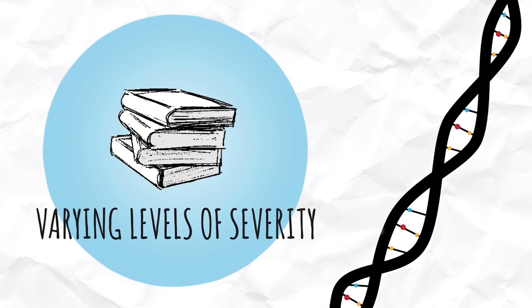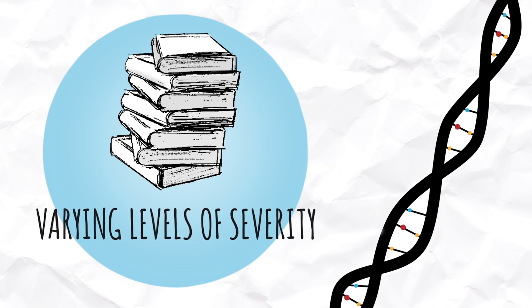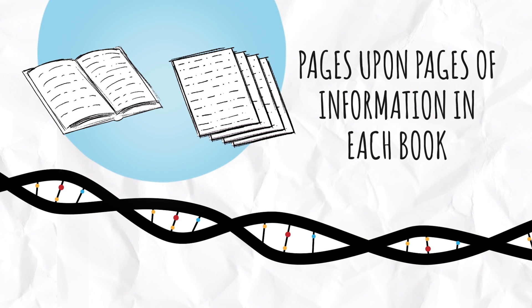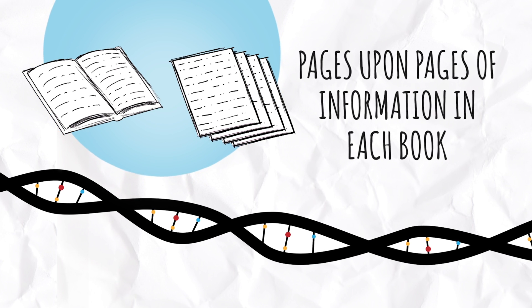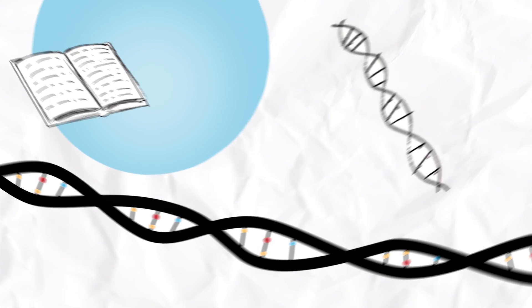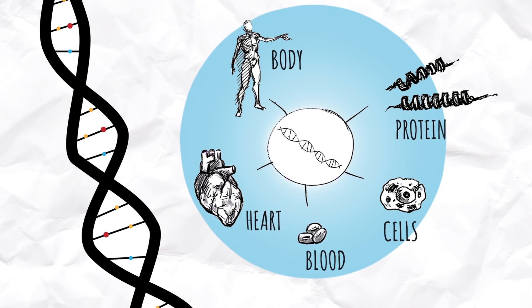If we take a closer look at each volume of the encyclopedia set, we will notice that there are pages upon pages of information in each one of these books. These pages are analogous to the genes that code for everything in our body, from tissues to blood to different bodily functions.